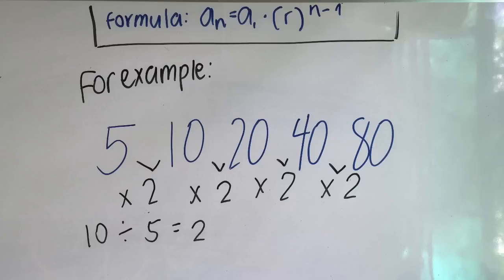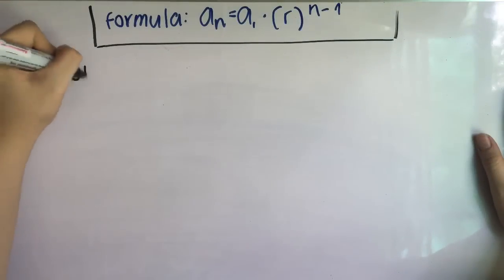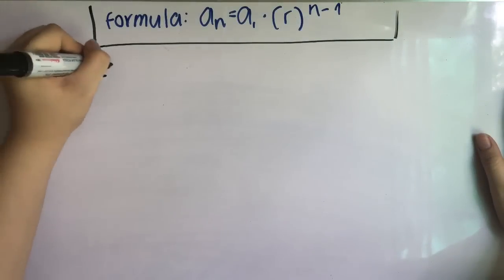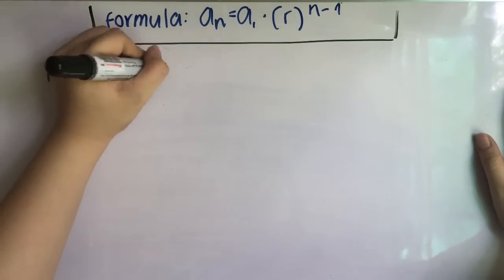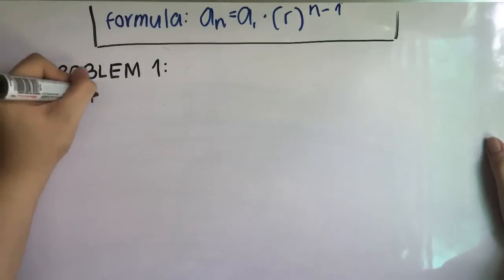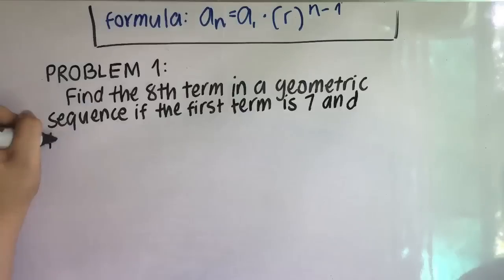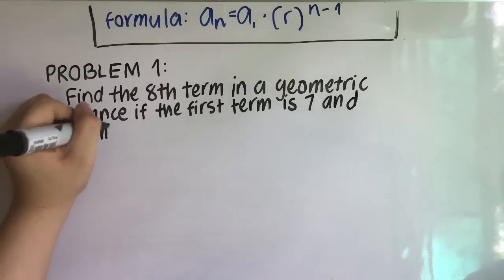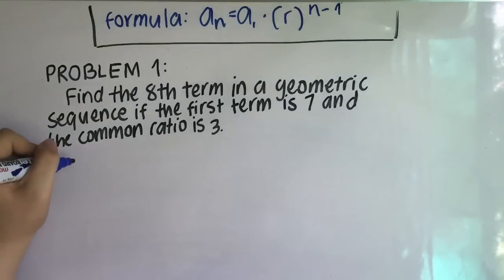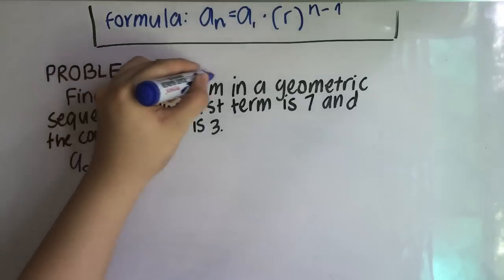Now that we know the basics, let's try out some geometric sequence problems. Problem number 1: Find the 8th term in a geometric sequence if the first term is 7 and the common ratio is 3. Before we start solving, let's encircle our given: the 8th term, 7, and 3.